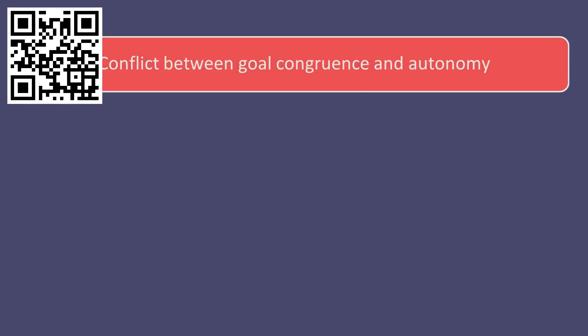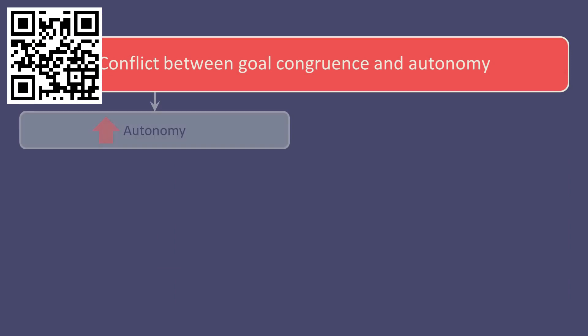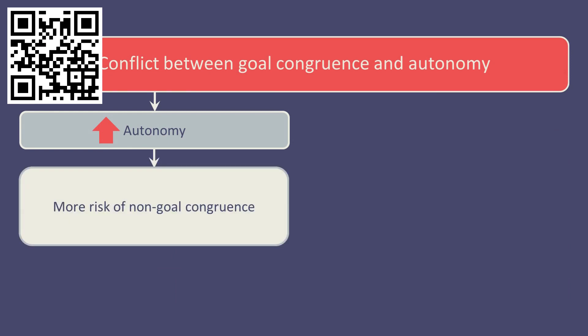A conflict between goal congruence and autonomy can often arise. If managers are allowed too much autonomy, then, while seeking to maximise the profits for their division, they may make decisions that are not in the best interest of the company or the group as a whole.